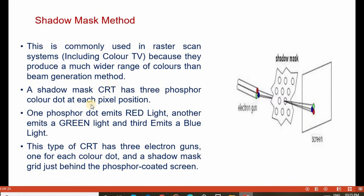The shadow mask CRT has 3 possible colored dots at each pixel position: red, green, and blue. One dot emits red light from the red electron gun, another emits green light from the green electron gun, and the third emits blue light from the blue electron gun. This type of CRT has 3 electron guns, one for each color dot. The shadow mask grid is placed just behind the phosphor coated screen.